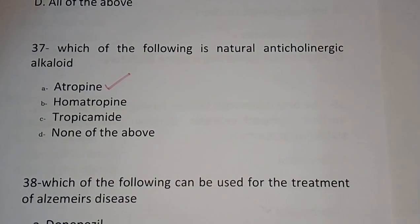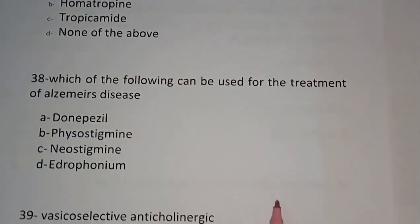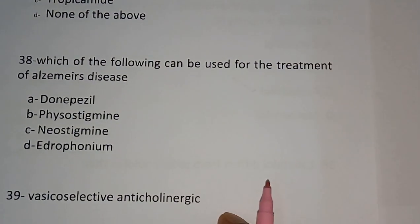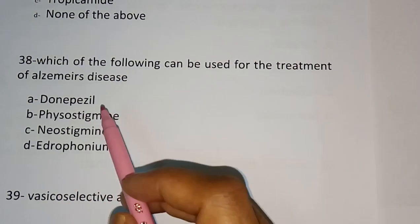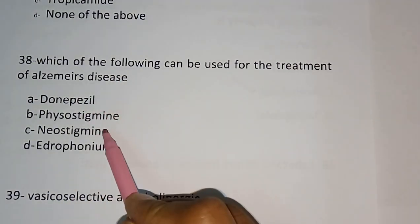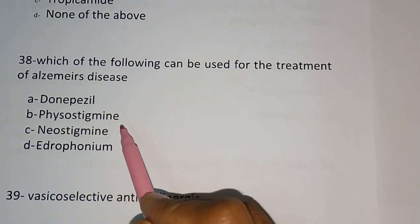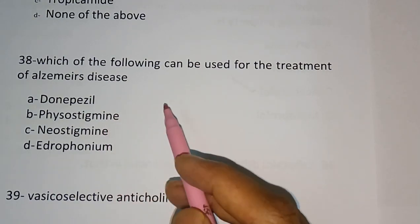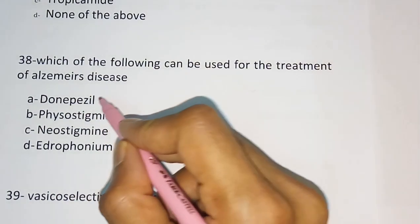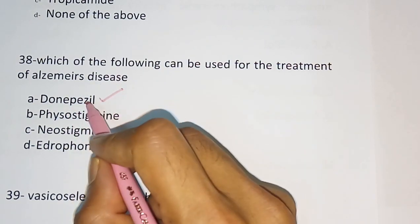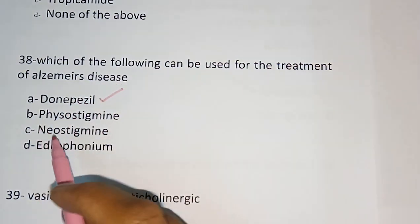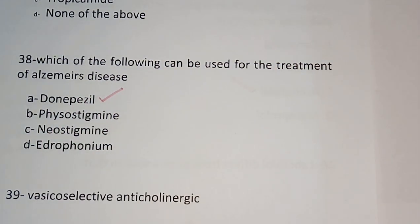Question number 38: Which of the following can be used for the treatment of Alzheimer's disease? Options are: Donepezil, Physostigmine, Neostigmine, Edrophonium. The correct answer is: Donepezil — for Alzheimer's disease.